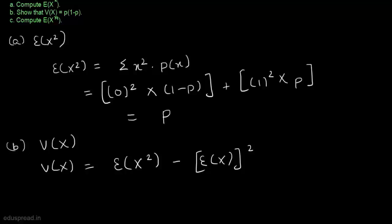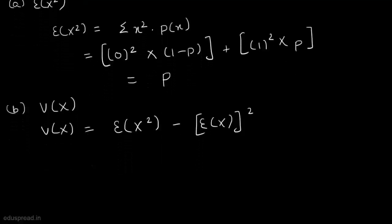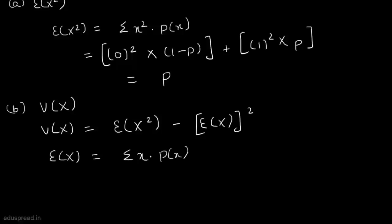To use this formula, we first need to calculate the expected value of x. We know that expected value of x is equal to summation x multiplied by p(x). So this is equal to 0 multiplied by 1 minus p, plus 1 multiplied by p, which is also equal to p. So the expected value of x is equal to p, and the expected value of x square is also equal to p.